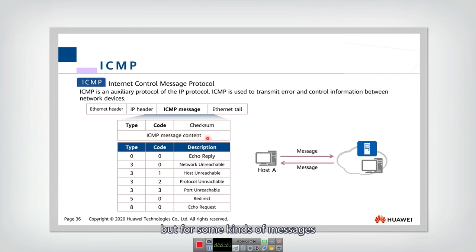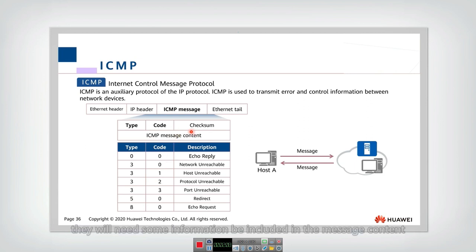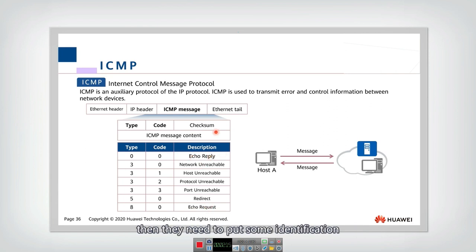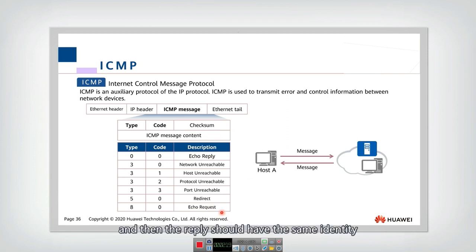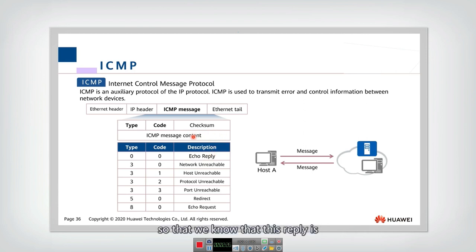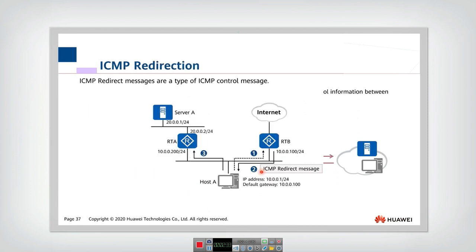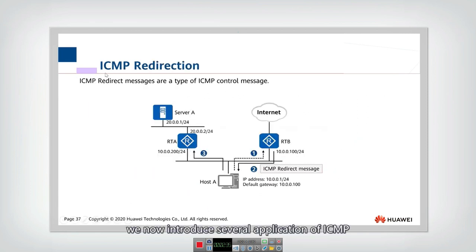For most messages, the message content is empty, but for some types, information must be included. For example, an echo request and echo reply need to put an identification and sequence number in the message content. The request includes these, and the reply must have the same identity and sequence, so we know which reply corresponds to which request.